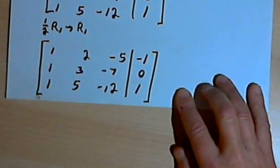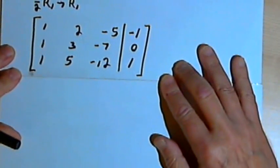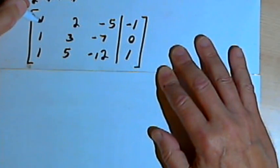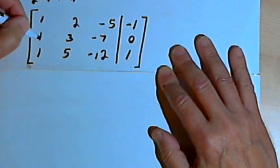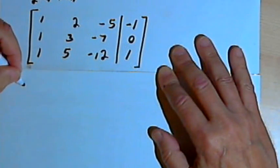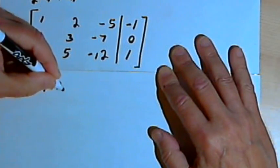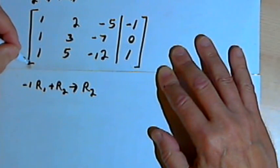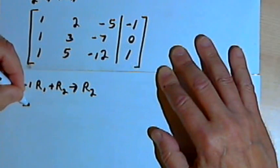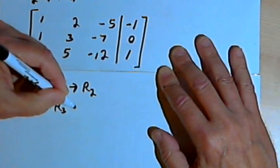Once we've got the 1 in position up there in the corner, what we want to do is turn everything else in that first column into a 0. I can do that by multiplying the first row by negative 1 and adding that to the second row to turn the 1 into a 0, and also adding that to the third row. So negative 1 times row 1 plus row 2 becomes the new row 2, and negative 1 times row 1 plus row 3 becomes the new row 3.